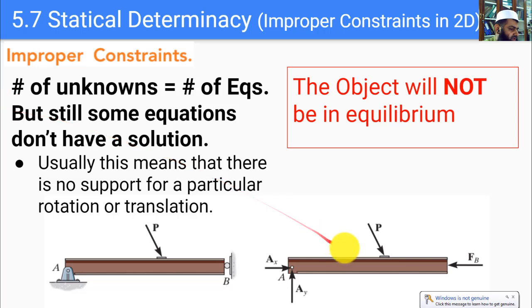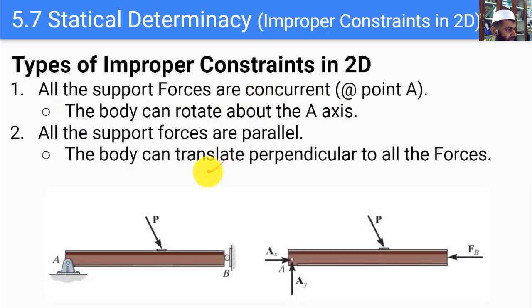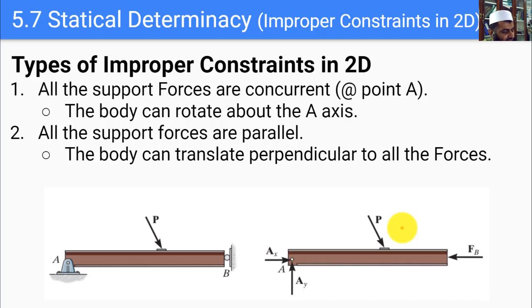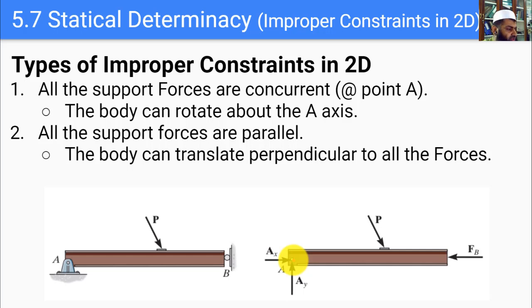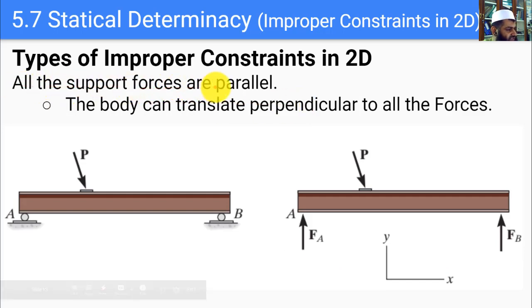There are several types of improper constraints. The first type is when all support forces are concurrent at a point. In that case, the body is free to rotate about that point, and any applied force not concurrent there will produce an unbalanced moment. Unlike the over-constrained case which remains in equilibrium, a system with improper constraints is actually out of equilibrium.